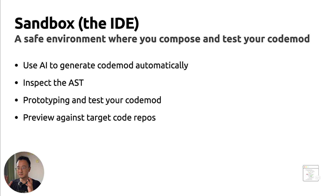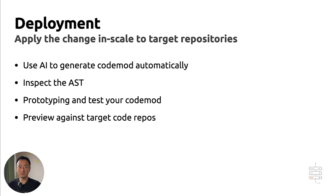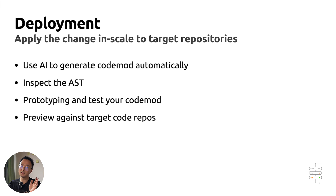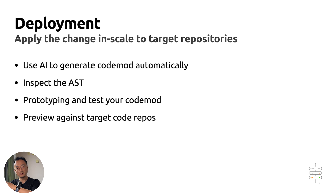One of the great things in Hypermode is AI support. You can ask the AI to generate the codemod — at least a draft — and then refine it and handle all the edge cases. The UI is very intuitive — you can see the before and after of your transform. Once you're happy with the result, the next step is deployment. Deployment means applying your changes to a target repository — you select a list of transforms to apply, select the targeting repository, and Hypermode creates the PR against it.